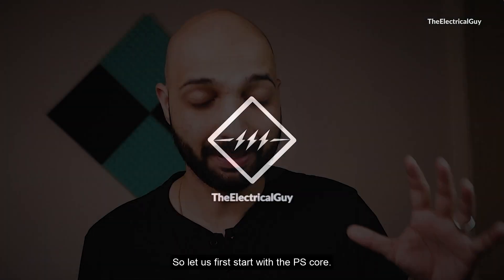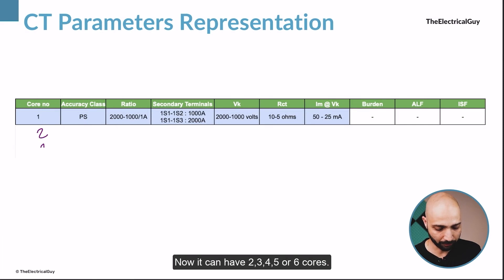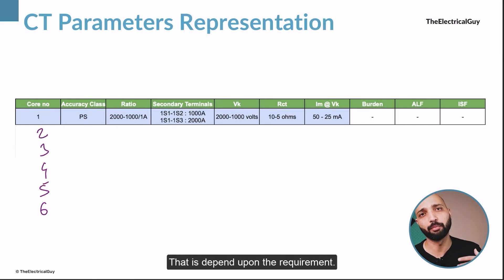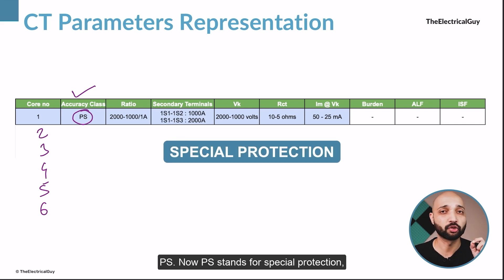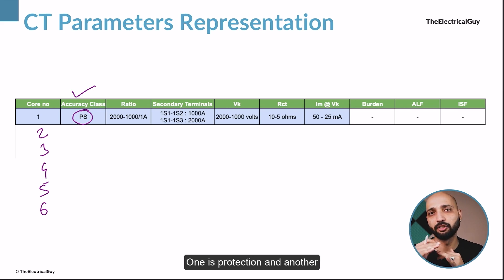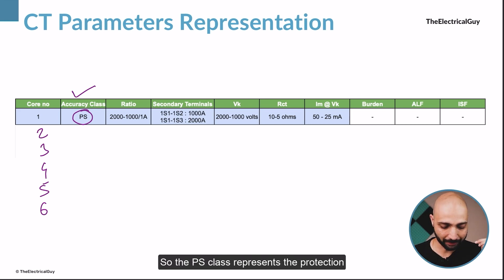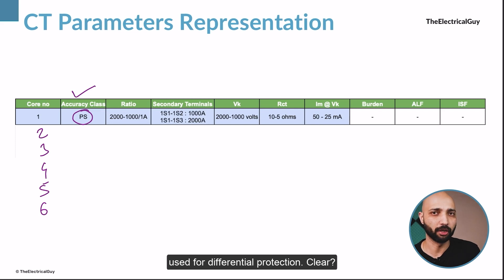Let us first start with the PS core. The first column represents the number of cores — it can have two, three, four, five, or six cores depending on the requirement. The next column is the accuracy class. Here it is mentioned as PS, which stands for special protection. The current transformer has two different types of accuracy: protection and metering. PS class represents the protection core accuracy, and it is generally used for differential protection.